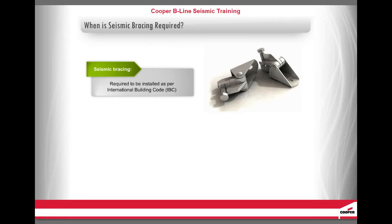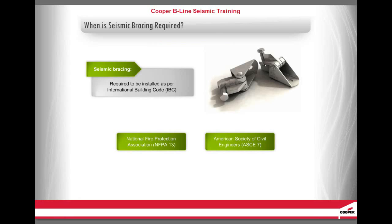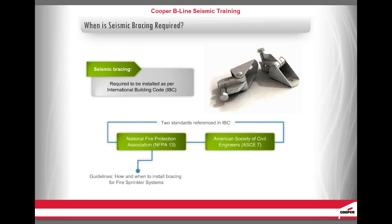Seismic bracing is required to be installed as per the International Building Code, IBC. The National Fire Protection Association NFPA 13 and the American Society of Civil Engineers ASCE 7 are two standards that are referenced in the IBC. NFPA 13 provides guidelines on how and when to install bracing for fire sprinkler systems, and ASCE 7 defines when it is required for mechanical, electrical, and plumbing systems. We'll now discuss each of these standards and outline their requirements.